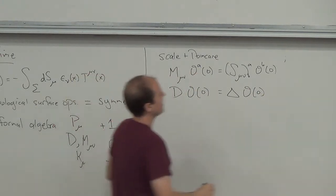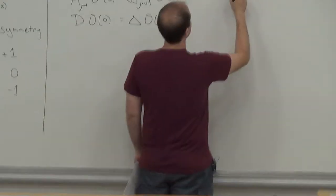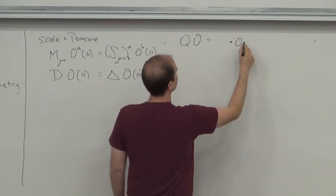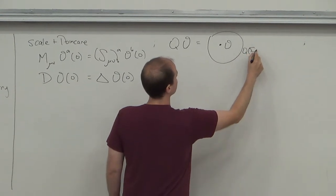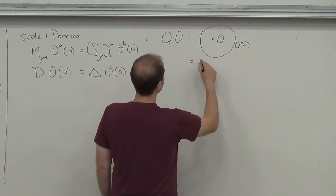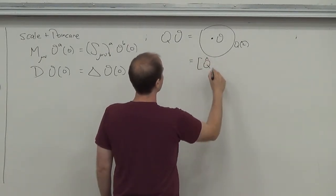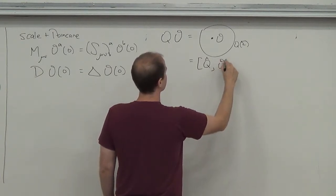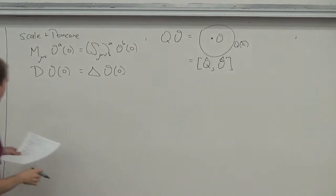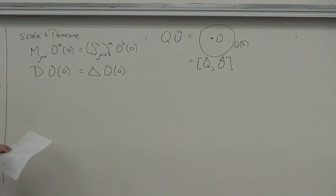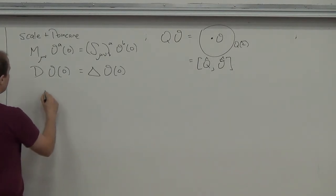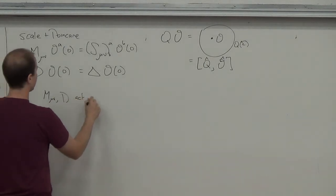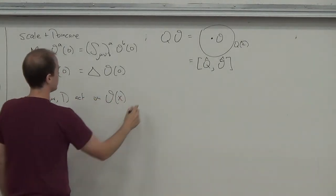When I write Q acting on O, the picture is that you have your local operator O sitting at a point, and you surround it with a surface on which Q lives. In some particular quantization of the theory, this becomes the commutator of the quantum operator corresponding to Q and the quantum operator corresponding to O. Using the conformal algebra, we were able to deduce how M and D act on O(x), just from the algebra.